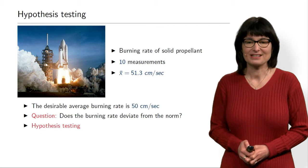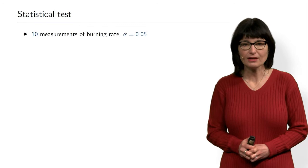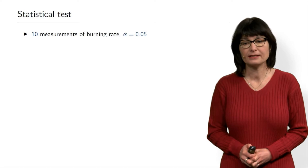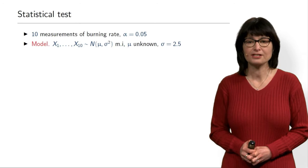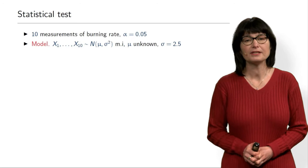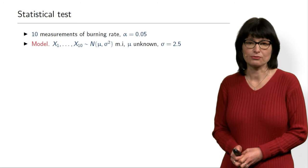Let's quickly go through the test in this particular scenario. We have 10 measurements of burning rate and a significance level alpha. We assume that our measurements are coming from a normal distribution. For burning rate, it's reasonable — the burn rate will be typical with some random fluctuation. So it is a reasonable assumption.